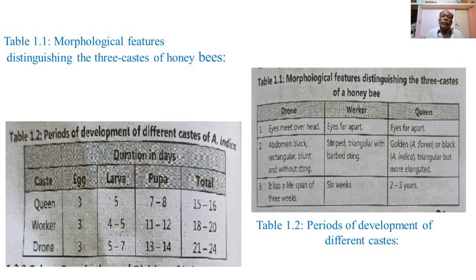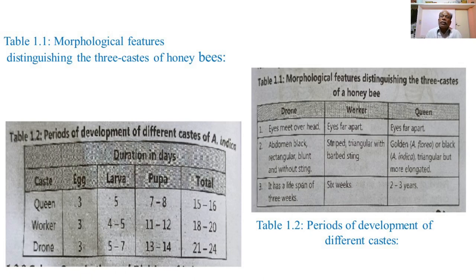The abdomen of the drone is black, rectangular, blunt, and without a sting. In the case of the worker, the abdomen is striped with bands, triangular, and has a barbed sting. In the case of the queen, the abdomen is golden in Apis florea or black in Apis indica, more elongated and triangular, and possesses a long sword-like sting. The drone has a lifespan of three weeks, the worker six weeks, and the queen two to three years.